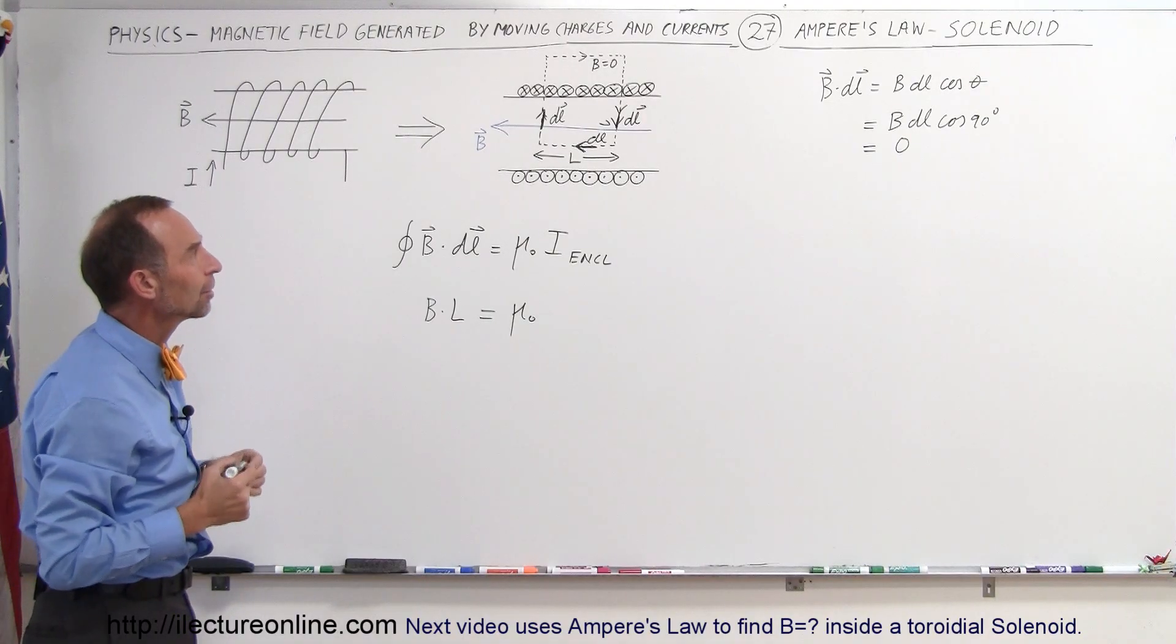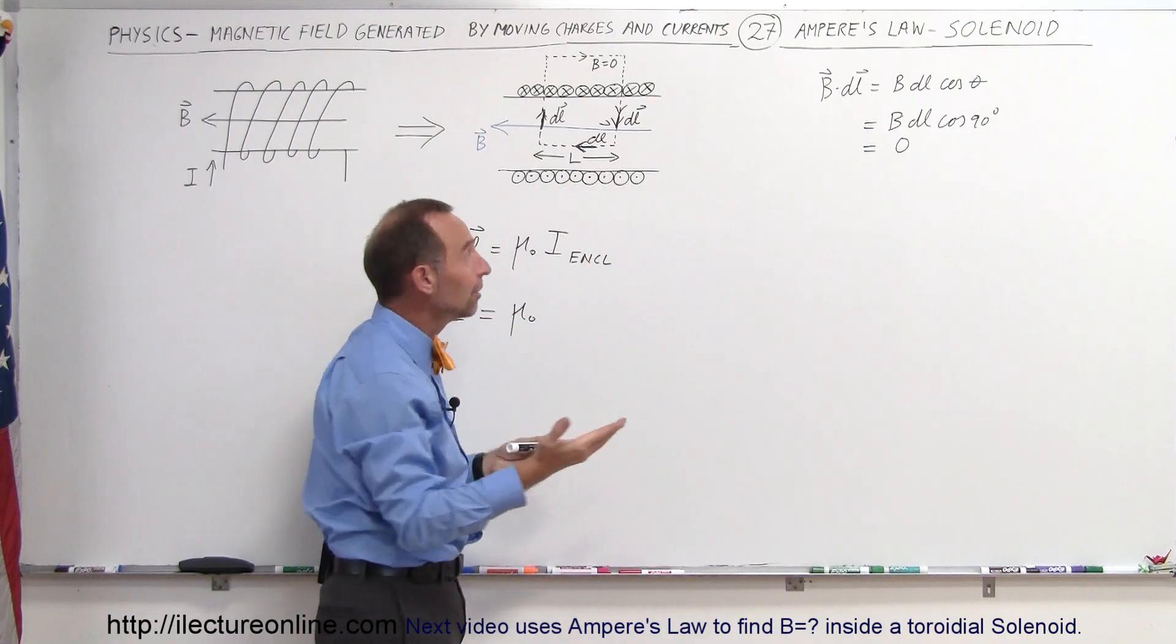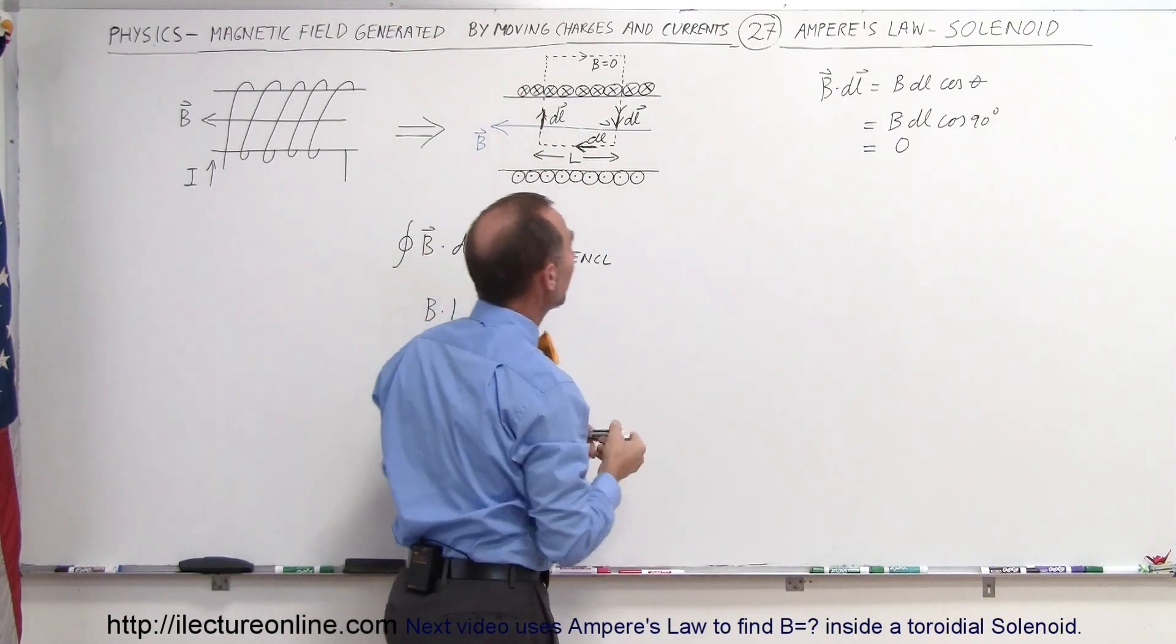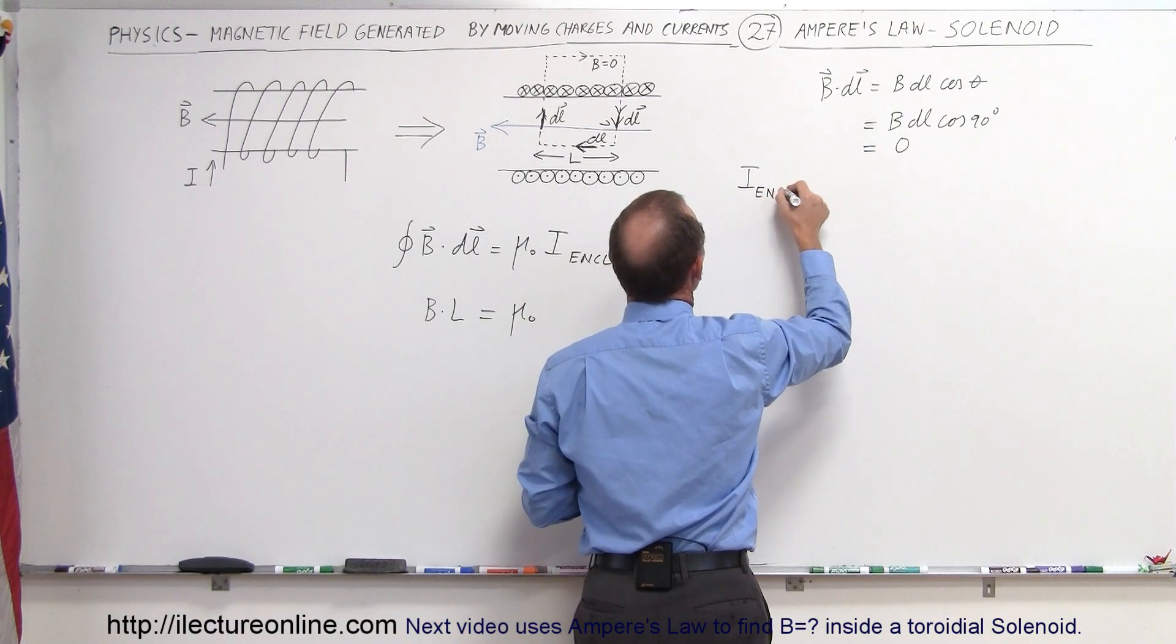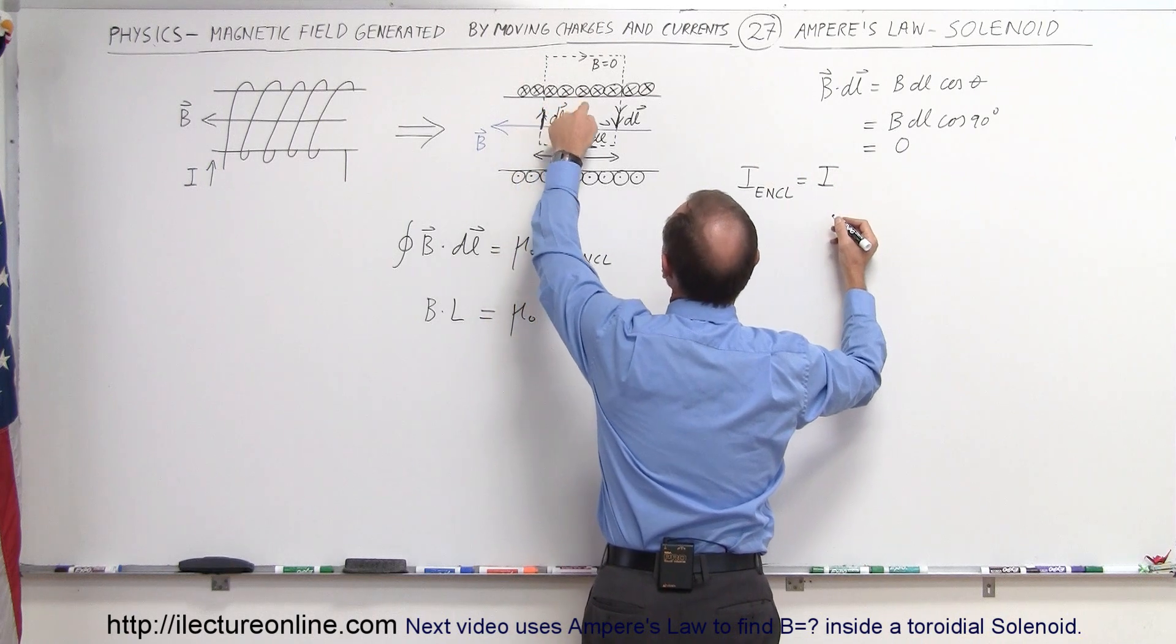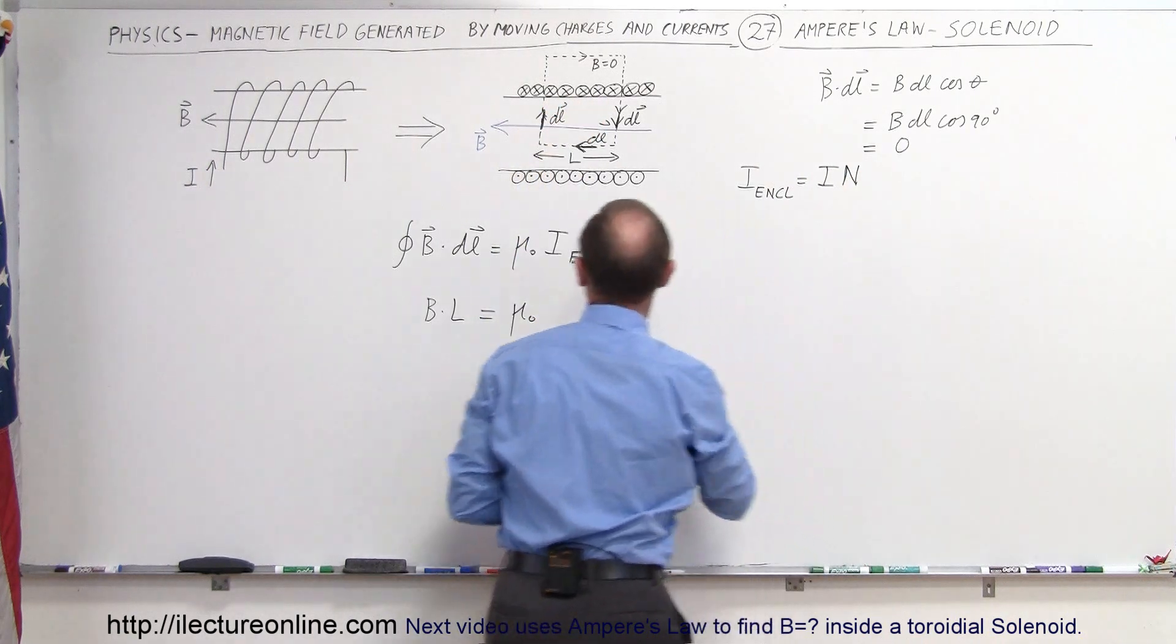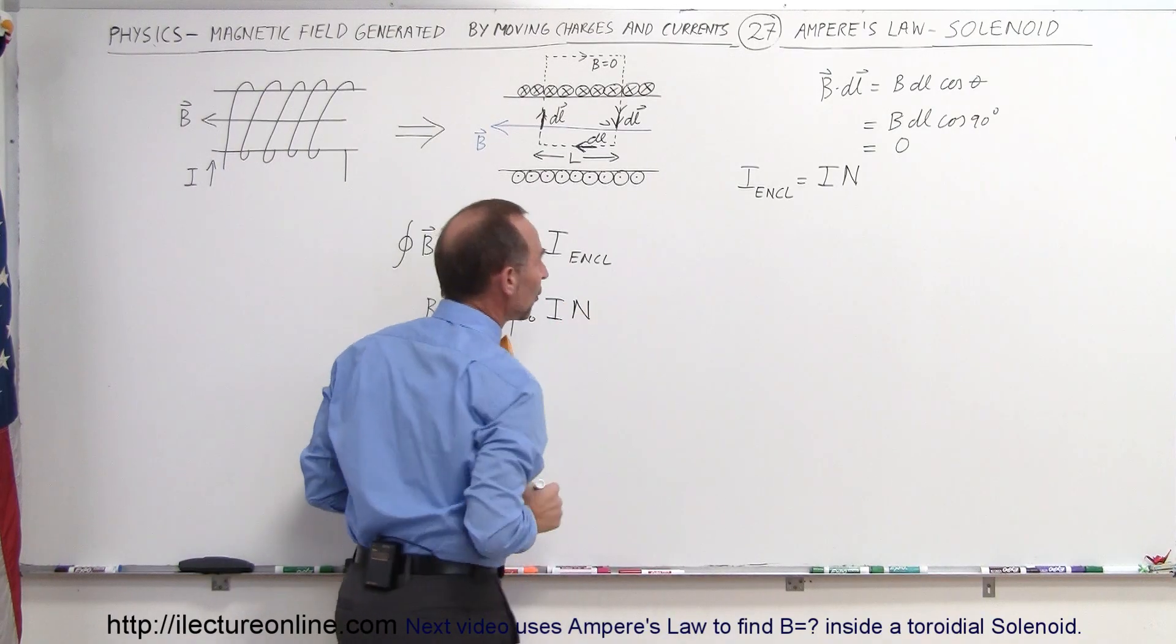All right, now we still need to find I enclosed. Well, notice that each one of these wires carries a current I, and there's N number of them. So we can say that I total, or I enclosed, is going to be the current through each wire times the number of wires. So let's call N the number of wires, which means we can write this as I times N.